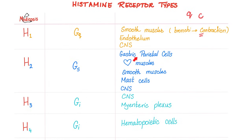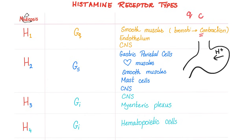H2 is GS coupled and increases gastric acid secretion from the stomach's parietal cells — hashtag proton pump. The proton pump pumps H⁺ (protons) toward the lumen of the stomach, while pumping potassium in the opposite direction. That's why we say the parietal cell has a hydrogen-potassium ATPase, or a hydrogen-potassium antiport (countertransport).